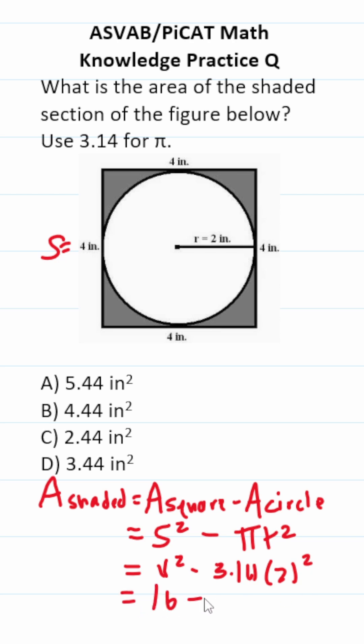This becomes 16 minus 3.14 times 4. I'm going to do this off to the side very quickly. 3.14 times 4. Move our two decimals to the right to make this 3.14 times 4.